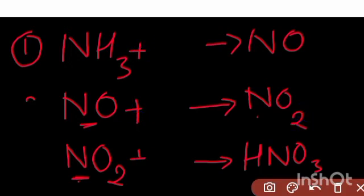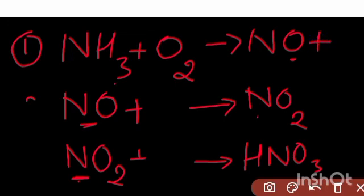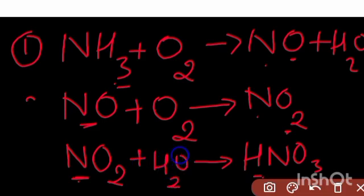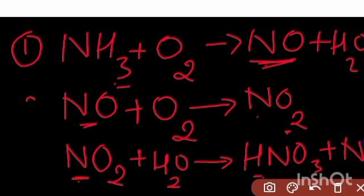In each step, oxygen is needed as a reactant. In the first step, reacting with oxygen gives NO and H₂O as remaining products. In the second step, extra oxygen is present and reacts accordingly. In the third step, water (H₂O) is needed, and the products are HNO₃ and NO. This is a way to remember the chemical reactions.